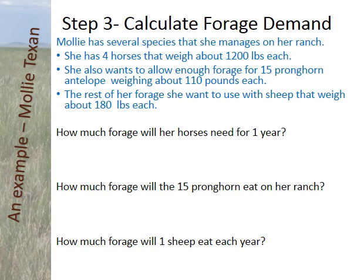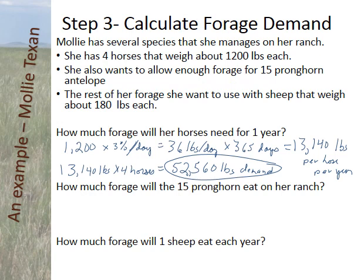Now we're going to calculate the forage demand — how much the animals need. Molly has four horses weighing about 1,200 pounds each. Horses are non-ruminants and hindgut fermenters, so they eat about 3% of their body weight per day — about 36 pounds per day. They're on the ranch all year, so that's 36 × 365 = 13,140 pounds per horse per year. Times four horses gives 52,560 pounds total for all horses.